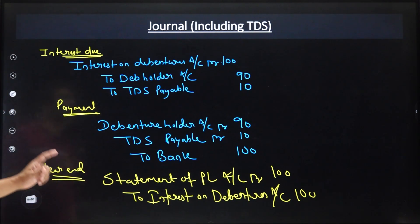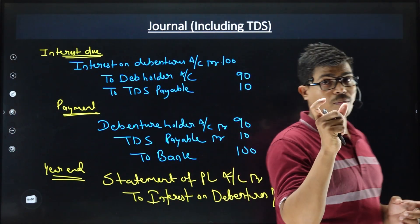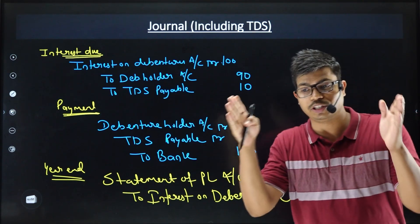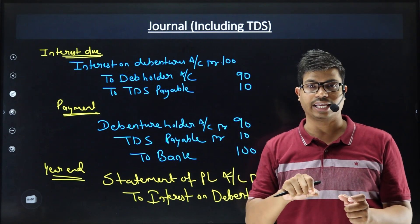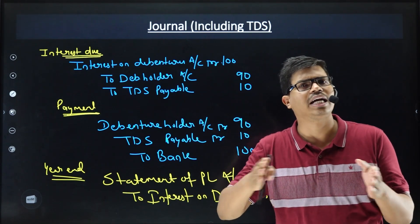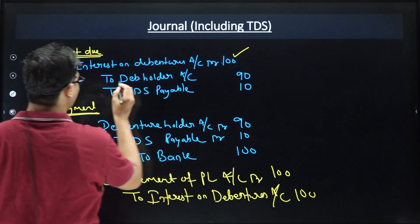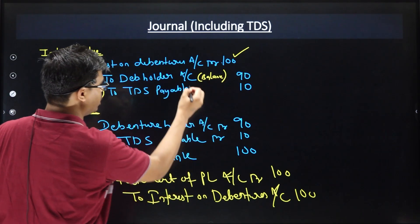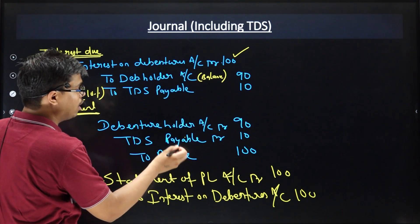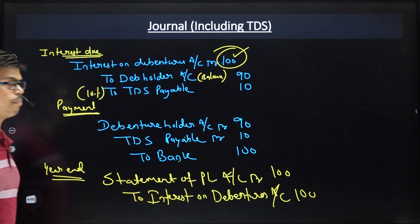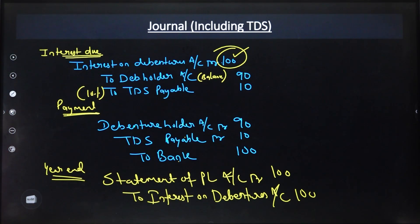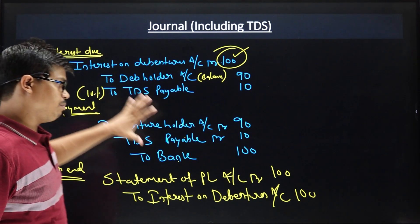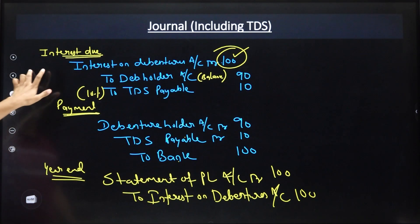So to calculate interest — take the face value of debenture and apply the interest rate percentage. If it is 6 months, apply for 6 months only. For example, face value 100, interest 10%, so 10 Rs interest. The debenture holder gets 90 Rs after TDS. Then both debit entries go to bank. Then the total interest for the year goes to the Statement of P&L on the debit side. These are the maximum journal entries for interest on debentures: interest due, payment, then P&L transfer.